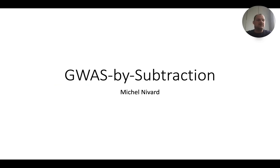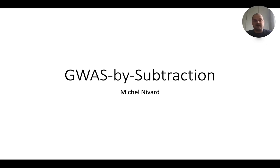Hi, and welcome to this lecture on GWAS by Subtraction, which is a specific model you can use in Genomic SEM to separate out the signal that is shared between two traits from the signal that is specific to one of the two traits. We get a lot of questions about this model based on our paper where we use it to split the signal in educational attainment into a part attributable to cognitive abilities and a part attributable to non-cognitive abilities.